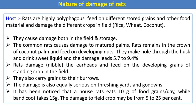Regarding the nature of damage, rats are polyphagous and feed on stored grains and other materials, damaging crops in the field as well. The rat causes damage both in field and storage. They damage mature coconut palm — remaining in the crown and feeding on developing nuts, making holes through the husk to drink sweet liquid, causing up to 5 to 9% damage. They also sever ear heads, feed on developing grains, and carry grains to their burrows. Damage is equally serious in threshing yards and godowns.